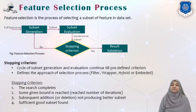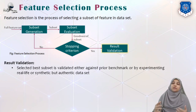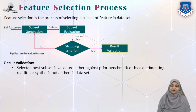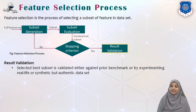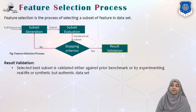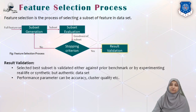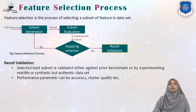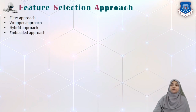The fourth stopping condition is when a sufficiently good subset is found. The last step of the feature selection process is result validation. The selected best subset is validated either against its prior benchmark or by using real-life or synthetic models that can authenticate the data. We can use different performance parameters such as accuracy, cluster quality, etc. to find out the effectiveness of the given subset.